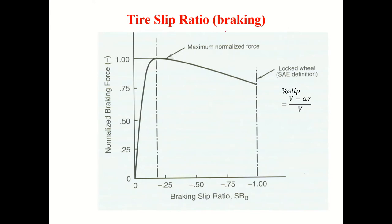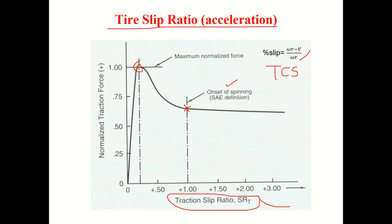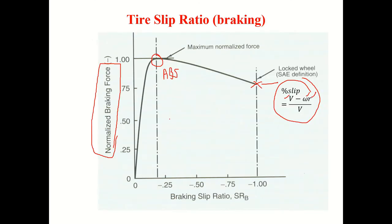Similarly for braking, the slip ratio is defined as (v − ω·r) / v, where ω is the angular velocity of the wheel, r the radius, and v the vehicle speed. When it is 100 percent, the wheels are locked and the tire skids. Around 20 percent slip is where the maximum braking force is available — as I explained when discussing ABS, approximately 18 to 20 percent slip gives the maximum normalized braking force.